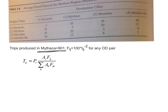Note that here, the travel times that are given to you — the intrazonal entries are not zero. For example, the travel time for an intrazonal trip within Econoli is 7 minutes. Similarly, the travel time is 5 minutes for trips within Mythaka, 3 minutes for trips within Shoredan, and 2 minutes for trips within Middleville. What that means is, typically, you cannot ignore intrazonal trips — we are going to have intrazonal trips as well as interzonal trips.